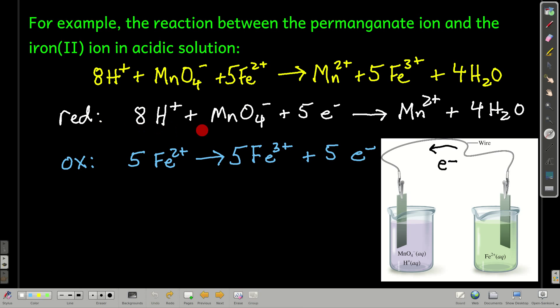It ends up the reduction half reaction looks like this and the oxidation half reaction looks like this. So we can say in this redox reaction that five electrons are transferred from iron two onto permanganate.